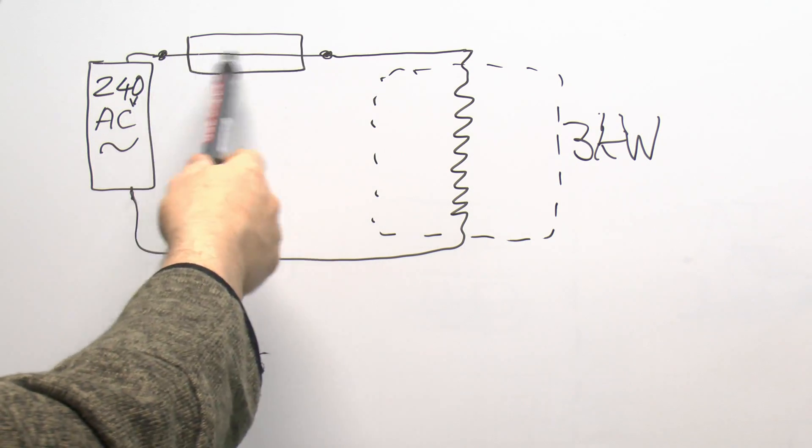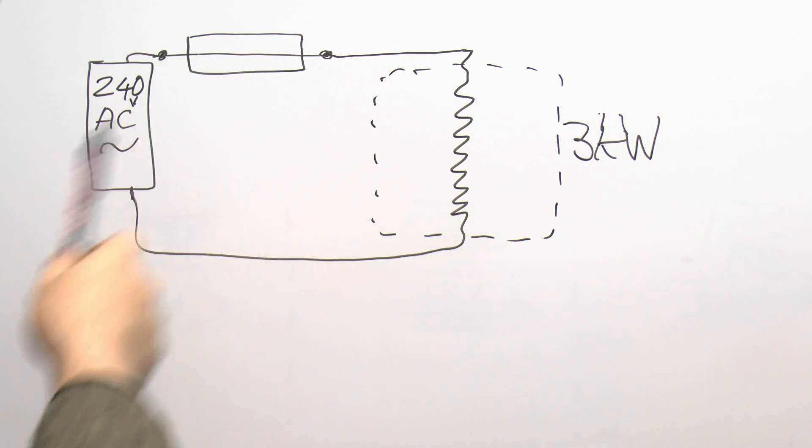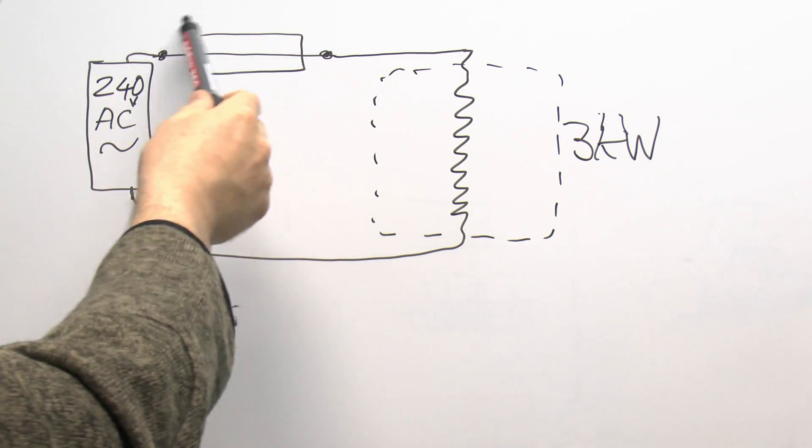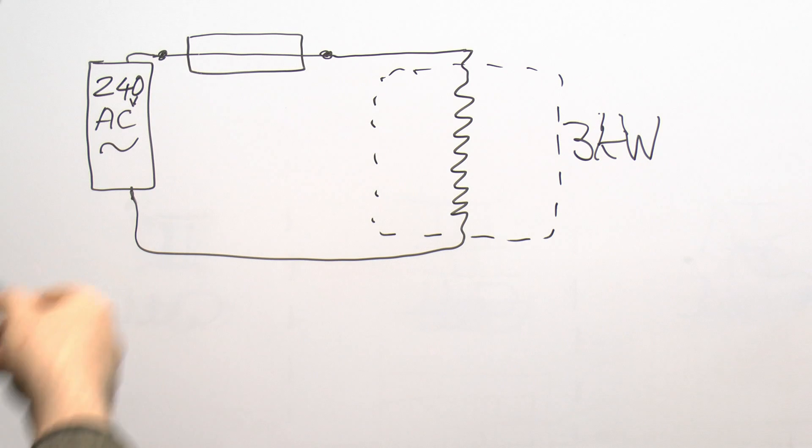The current is still going to flow through there and the heating effect of that within the fuse is going to be exactly the same regardless of what voltage you've got in the total system. Because the voltage across the fuse here is going to be in the order of one or less volts at any particular time, most of the voltage will appear across the heating element.